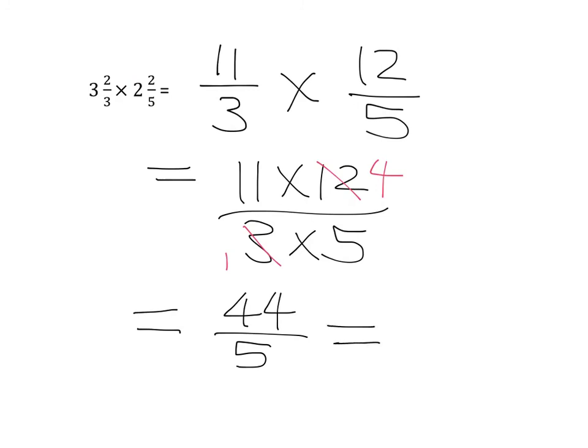And if I want to turn that back into a mixed number, I say five goes into 44 eight times, and that with four remaining. So it's eight and four fifths.